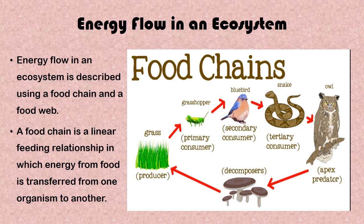Moving along, we'll be looking at energy flow in an ecosystem. Energy flow in an ecosystem is described using a food chain and a food web. A food chain is a linear feeding relationship in which energy from food is transferred from one organism to another. Food chains are made up of three components: the producers, the consumers, and the decomposers. A typical example of a food chain starts with grass, which are green plants and are producers.